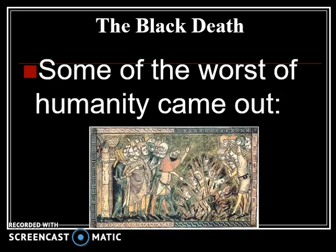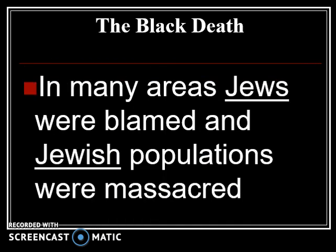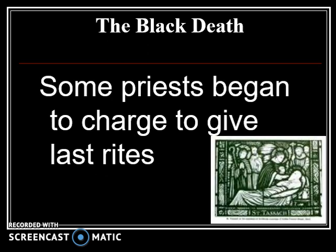Some of the worst of humanity came out, as you often see in situations like this. In many areas, Jews were blamed and Jewish populations were massacred. This had a lot to do with needing someone to blame. Certain groups were cleaner than others, so disease spread less among them. Blame was placed on Jewish populations because fewer Jews were infected, and it was believed that meant they had created the plague — which, of course, is not true.